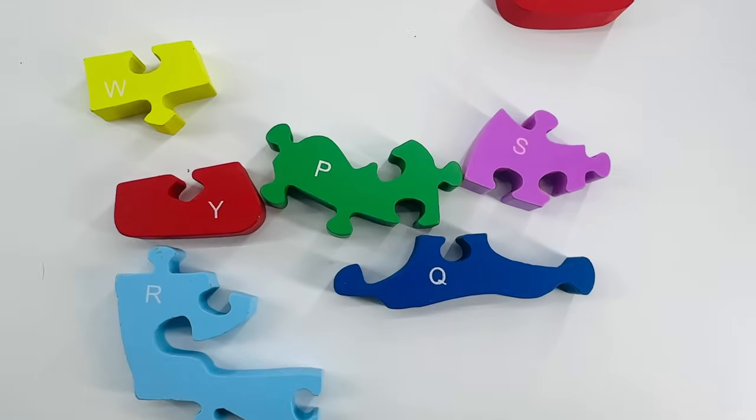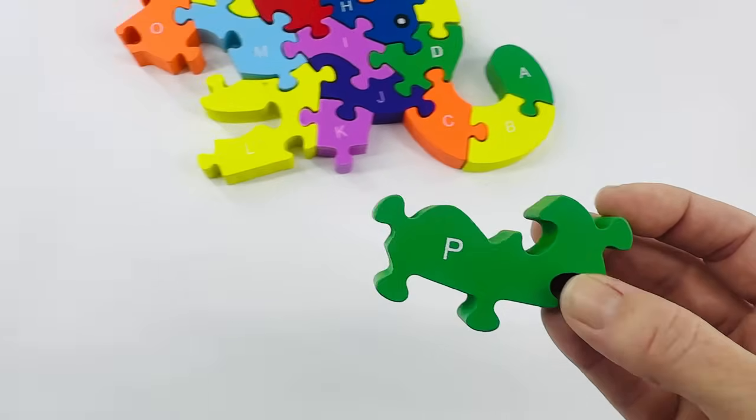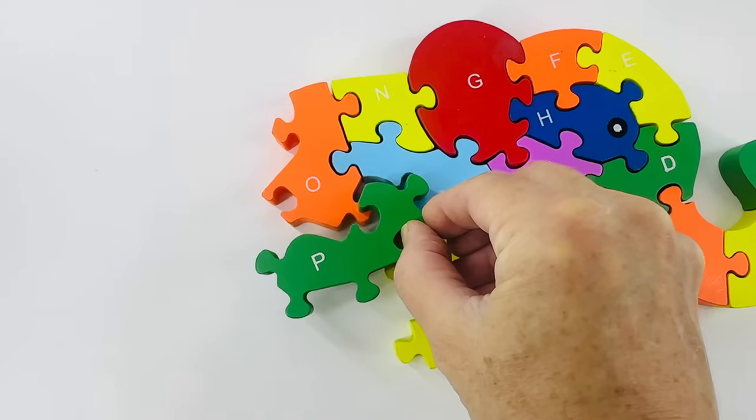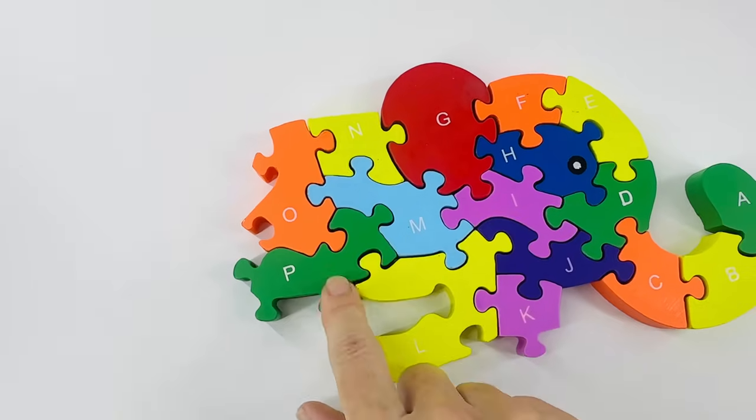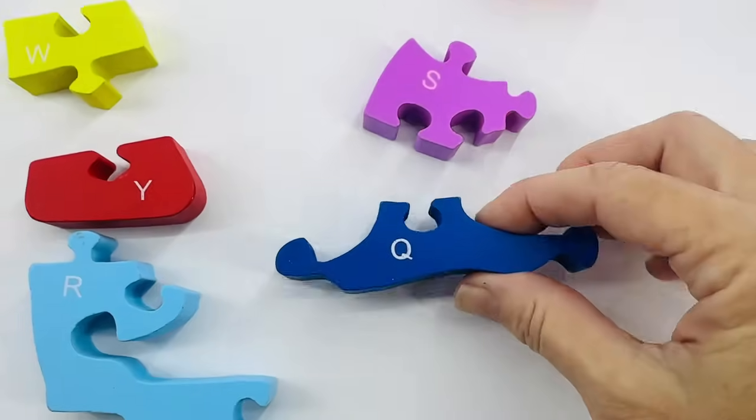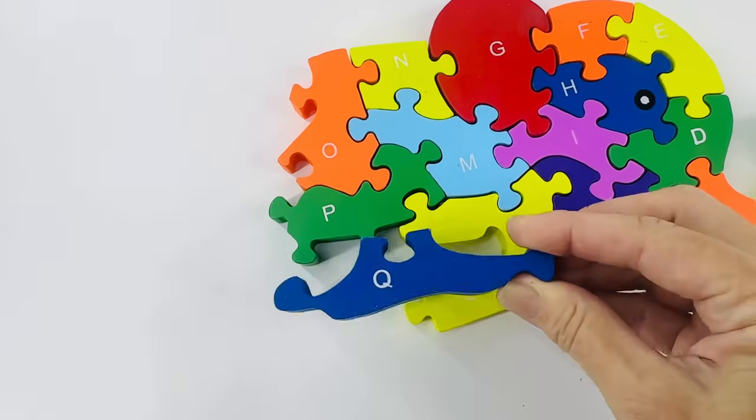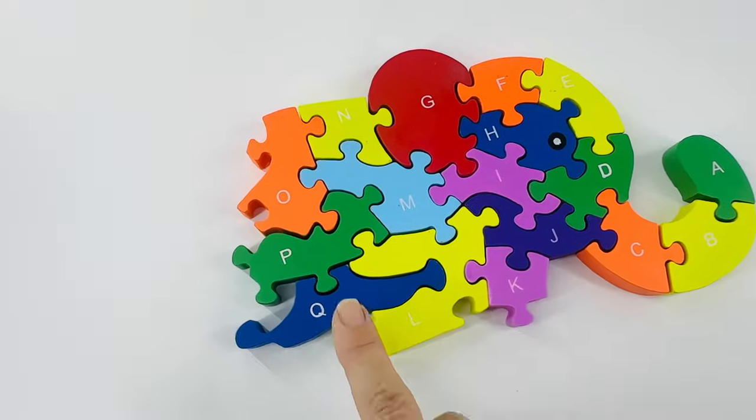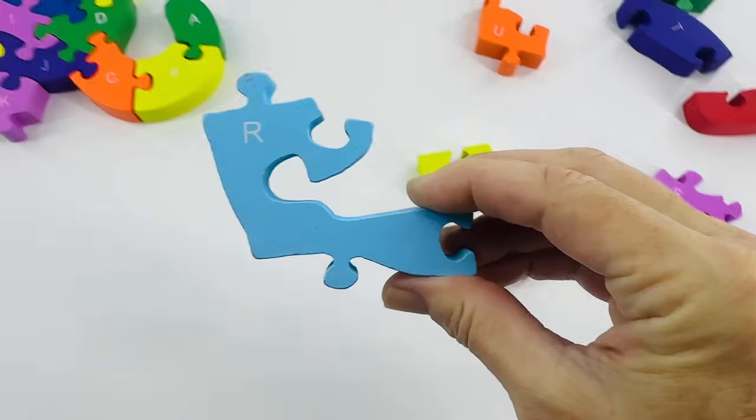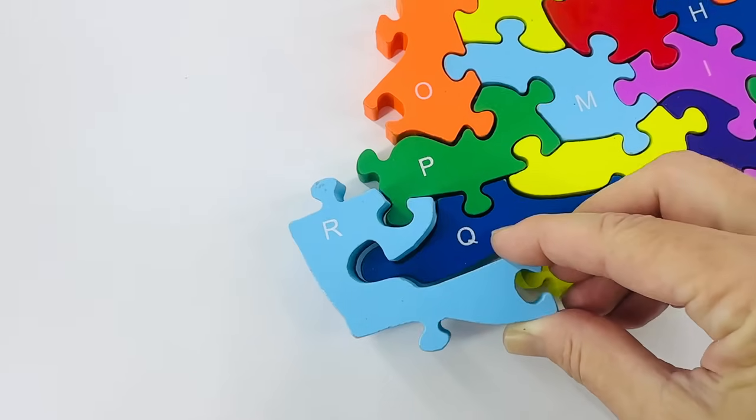After the letter O is the letter P. Can you point to it? It's right here. P is for porcupine. And I wonder, it looks like it fits in that shape. You're doing such a great job. After the letter P is the letter Q. Here it is. Q is for question mark. And I think, look, this looks like it fits right here. We're doing great. After the letter Q is the letter R. I see it. R is for rabbit. And this goes, oh yes, that shape looks like it fits. Yes.